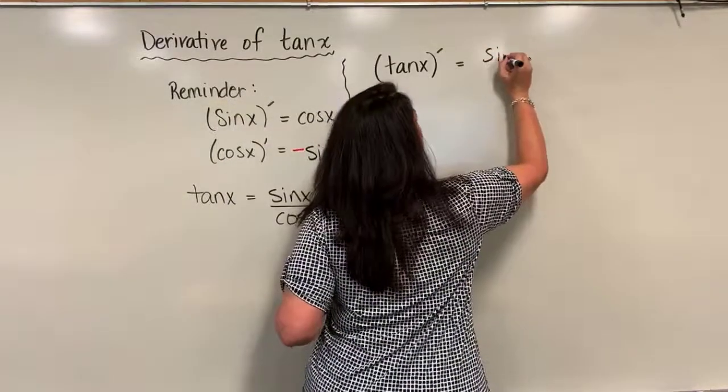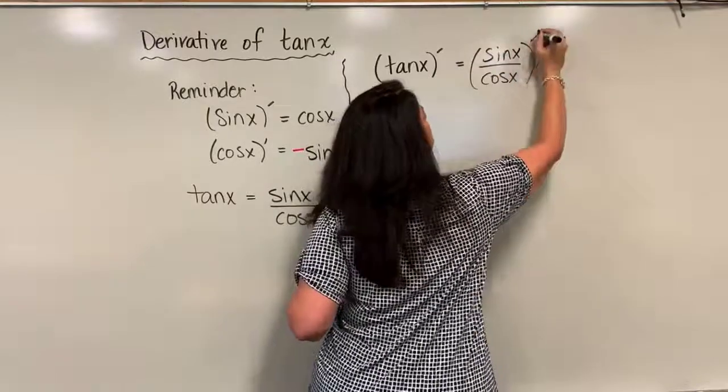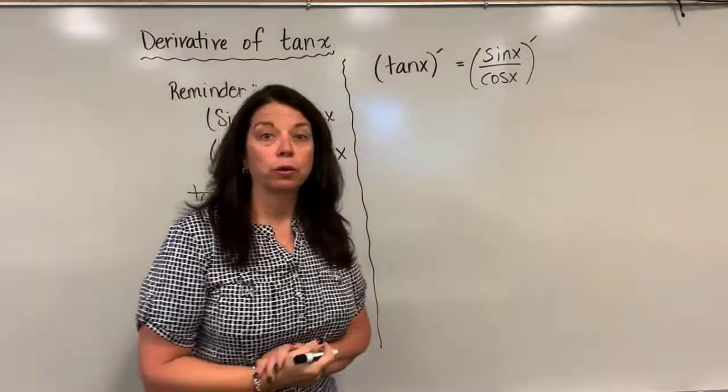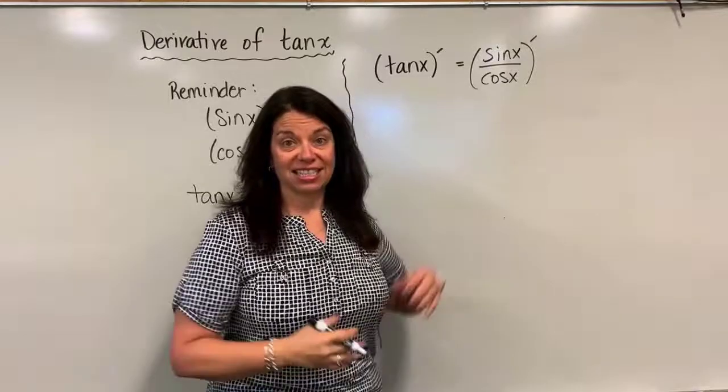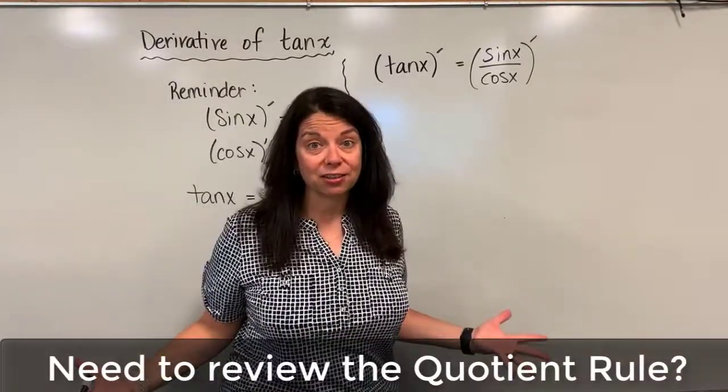So we have sine x divided by cosine x and of course I need to take the derivative of that whole quotient. Well, the other rule I need to bring in is now that I have introduced a quotient I have to use the quotient rule to handle this derivative.